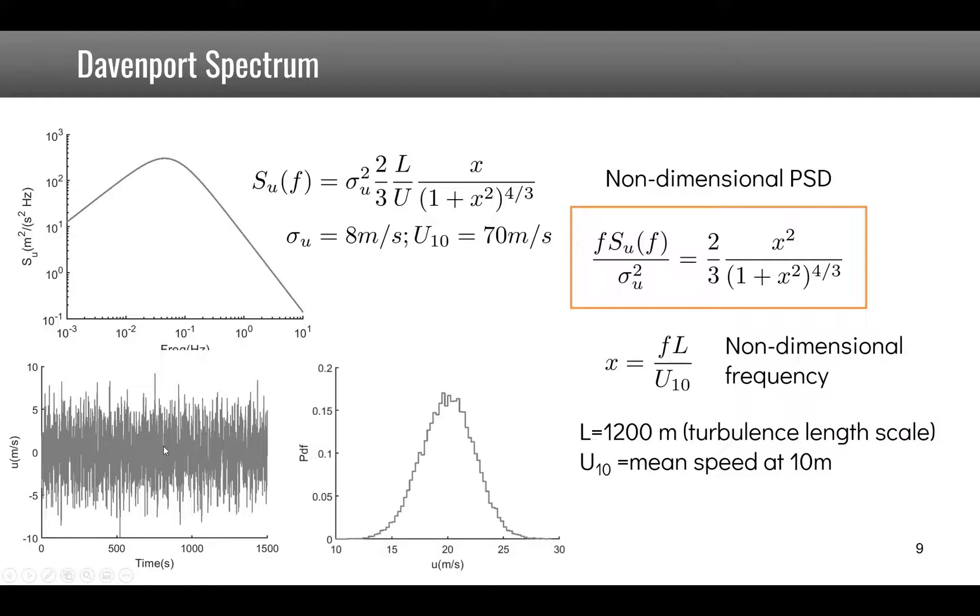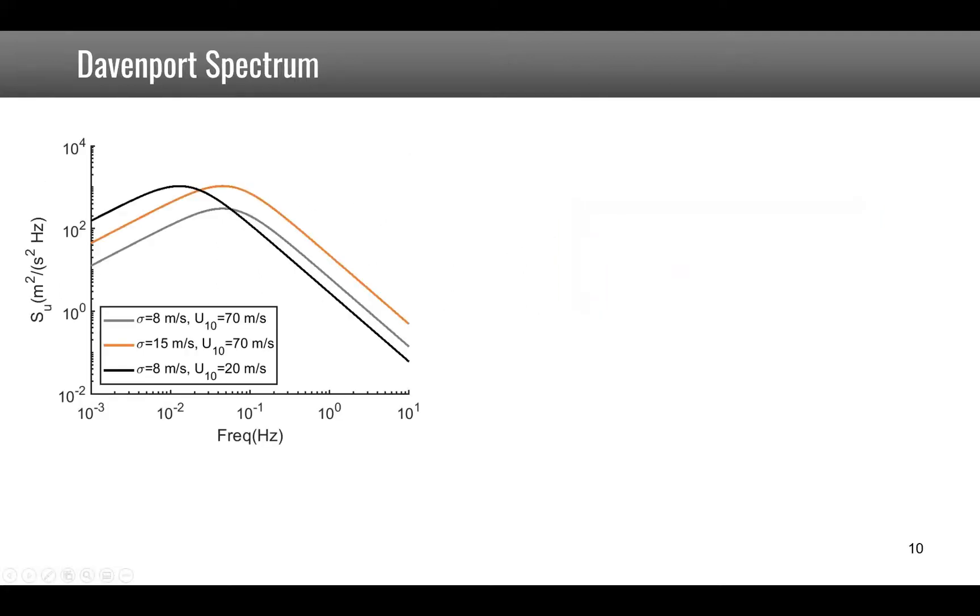If we know the mean speed, for example here the mean speed U is equal to 20 meters per second at this given height, we see that this is the probability density function of the wind, where you clearly see the mean at 20 meters per second and the standard deviation of 8 meters per second.